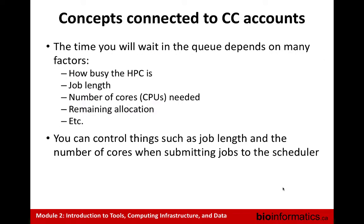What is important when you do analysis, because you usually want your results as fast as possible, is the queuing time. Being in the queue — because a lot of people are using this shared resource — could take more of your time than the real analysis. So there are parameters you need to set when you set up your jobs: the length of the job, the number of CPUs you need, and how much of your allocation you have already used. These are parameters you can use to try to avoid spending too much time in the queue.